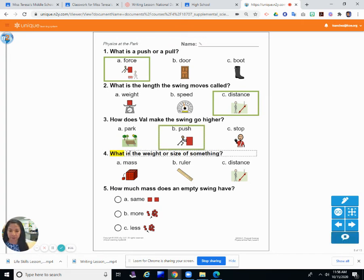Number four. What is the weight or size of something? Remember Ava added what to the swing? The weight and size. Is it A, mass, B, ruler, or C, distance? Did she add ruler? No. Did she add distance? She added mass. Mass.